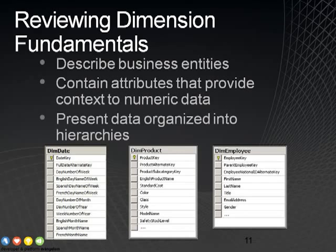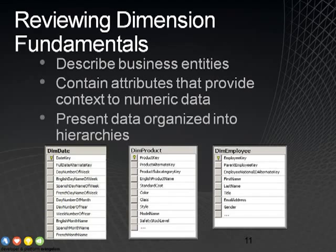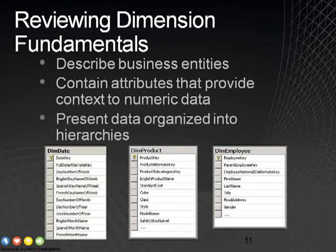Typically when we're building attributes for hierarchies, we're looking for things where there's a one-to-many relationship between the values in those columns. So with year, we have a one-to-many relationship with quarter, and from quarter we have a one-to-many relationship to months. You can also see in this example that we might have translation information, so we might track things in English and Spanish and French, for example, to be able to support global analysis.